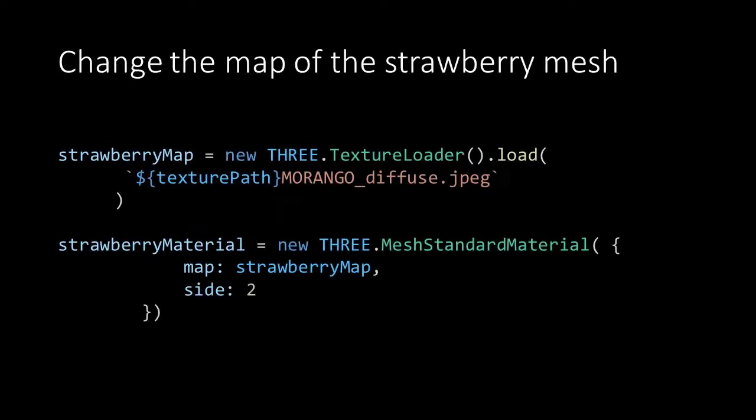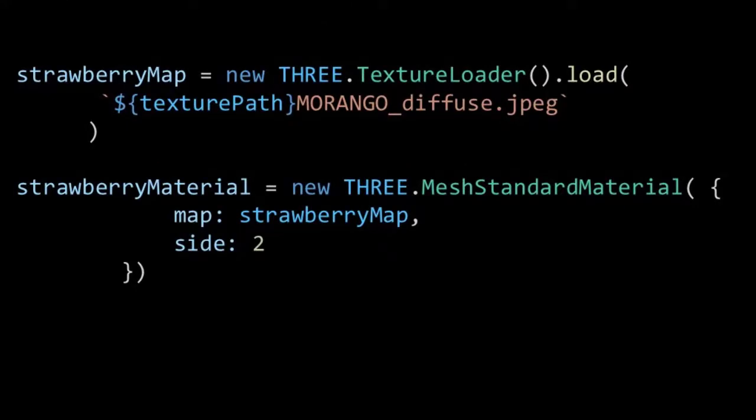We will be discussing the script in more detail in the next lecture, but just to give you an idea it's very similar to what we did with the earth map. We create the strawberry map just like the earth map by instantiating the texture loader and applying the load method to load it with our texture image. Then as a material we use the mesh standard material and set the map property to our strawberry map. Also we set the side property to 2 so it's double-sided.